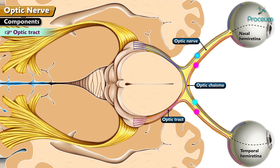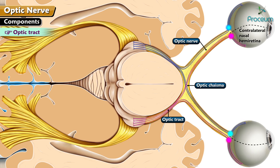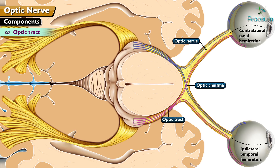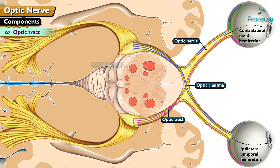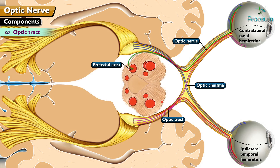Each optic tract contains fibers from the nasal half of the opposite side, called the contralateral nasal hemiretina, and fibers from the temporal half of the same side, called the ipsilateral temporal hemiretina. The optic tract projects into the ipsilateral lateral geniculate body, pre-tectal area, and superior colliculi.